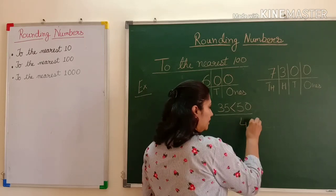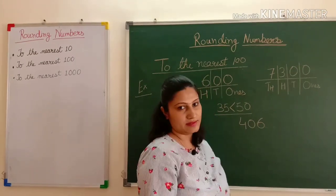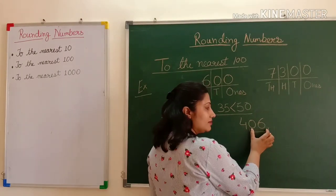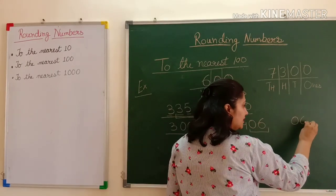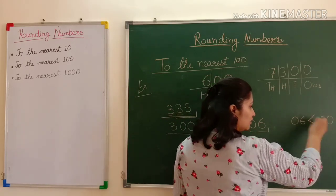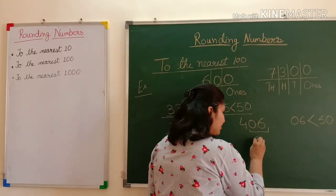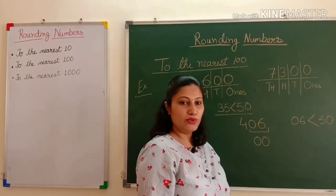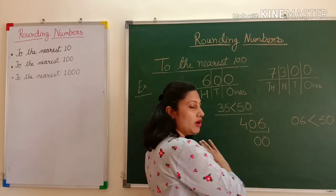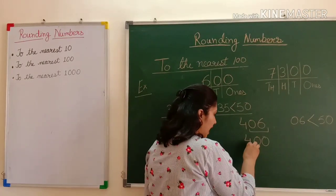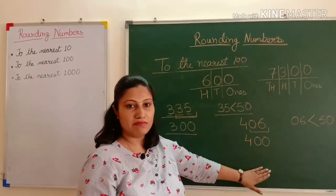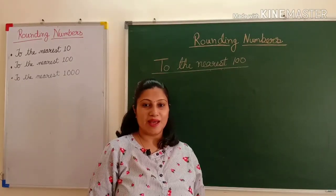Let's take one more example: 406. In its tens place and ones place, the combined number is 6. I compare 6 with 50 — 6 is smaller than 50. So I put zero in the tens and ones places and do not add anything to the hundreds place; I write 4 as it is. When I round off 406 to the nearest hundred, the number is 400.